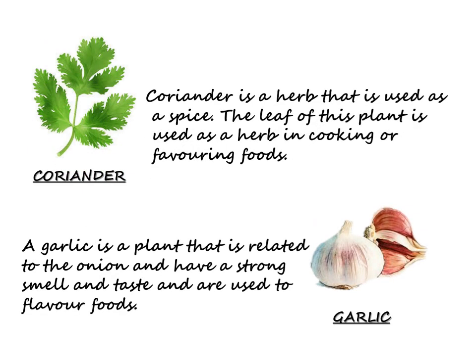Coriander is a herb that is used as a spice. The leaf of this plant is used as a herb in cooking or flavoring foods. Garlic is a plant that is related to the onion and has a strong smell and taste, and is used to flavor foods.